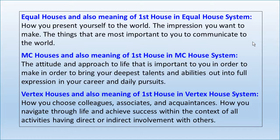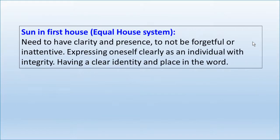So those are the three house systems and now let's do it. We're going to talk about each planet in each house. I'm going to describe what the sun in the first house means according to all three house systems, and then we'll do the moon and so on. I'm going to go through all 12 houses with the sun. So let's see what sun in the first house means in the equal house system.